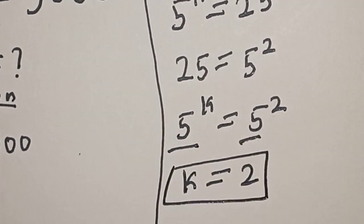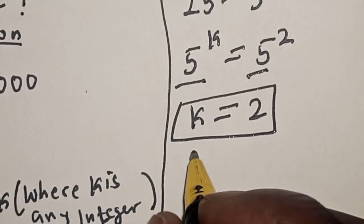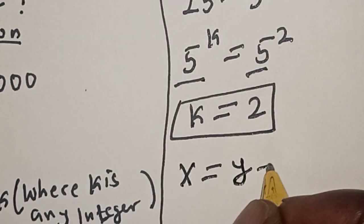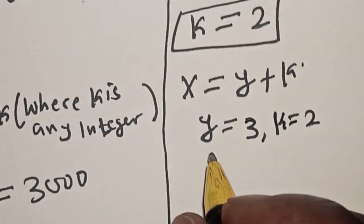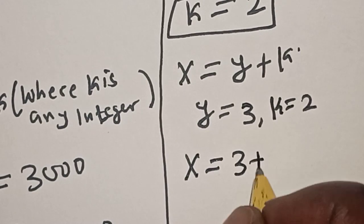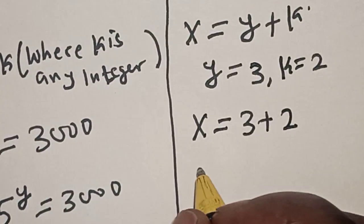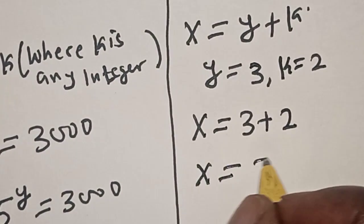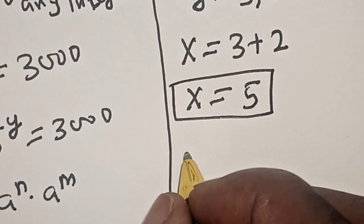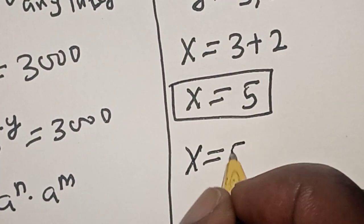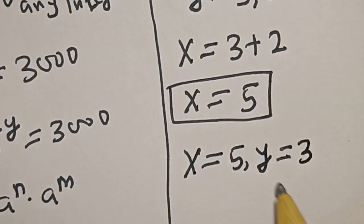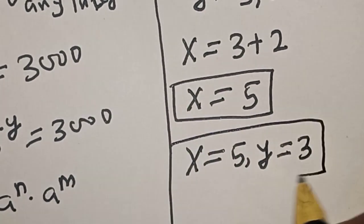We've gotten the value of k, which is equal to 2. Remember that x equals y plus k, so x equals 3 plus 2, therefore x is equal to 5. Our final answers are x equal to 5 and y equal to 3.